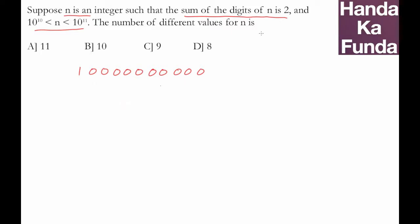Now if the sum of the digits of n is 2, that means this digit can be 1, or this digit can be 1, or this digit can be 1. Very similarly, any of the 10 zeros can be replaced with 1 and that will generate a value of n.